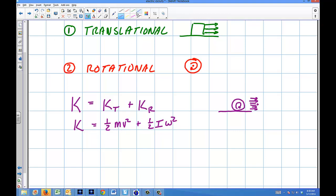And so these terms, like I said, they're similar, but they're a little different. So how are they different? This is the mass. This is the linear speed.